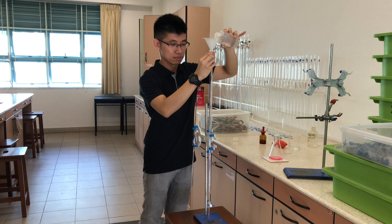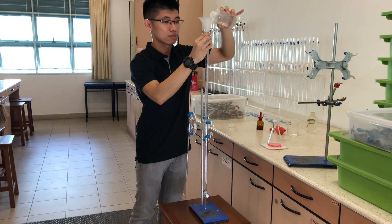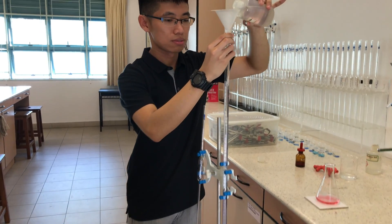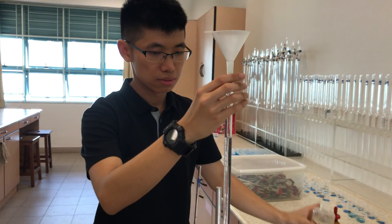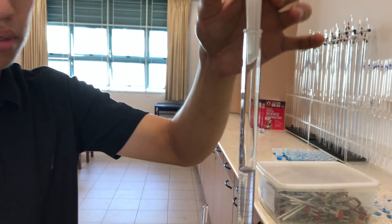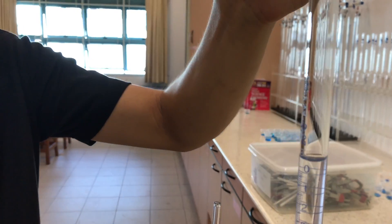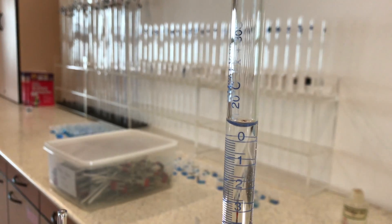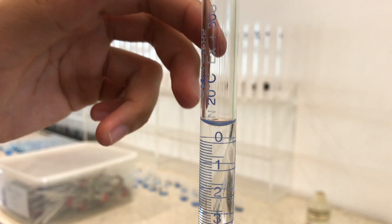Once you have filled the burette, remember to remove the filter funnel from the top to prevent any residual liquid from dripping down. We can fill a little bit more past the zero mark and then move over to the sink to adjust the liquid level to zero.